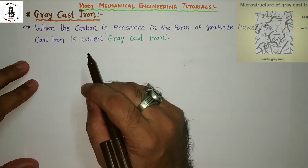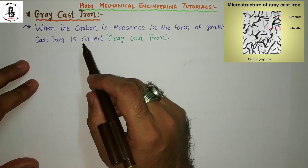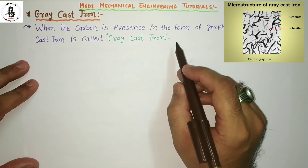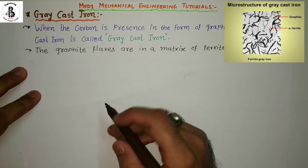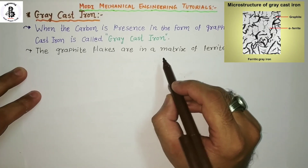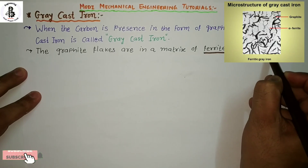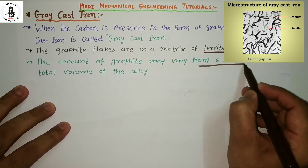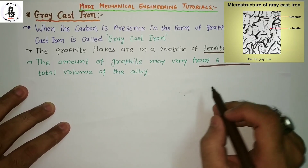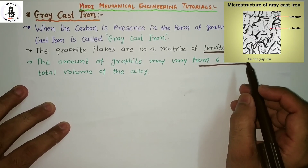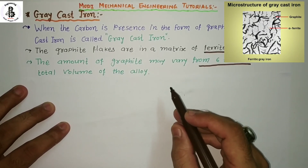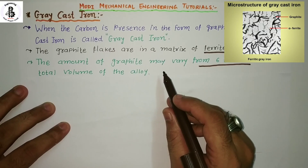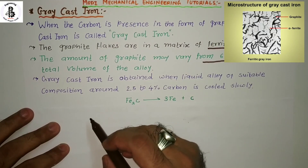Looking at the microstructure of gray cast irons: when carbon is present in the form of graphite flakes, cast iron becomes gray cast iron. These graphite flakes are found within a matrix of ferrite and pearlitic structure. The graphite may vary from 6 to 70 percentage of the total volume of the alloy, giving it a gray appearance.